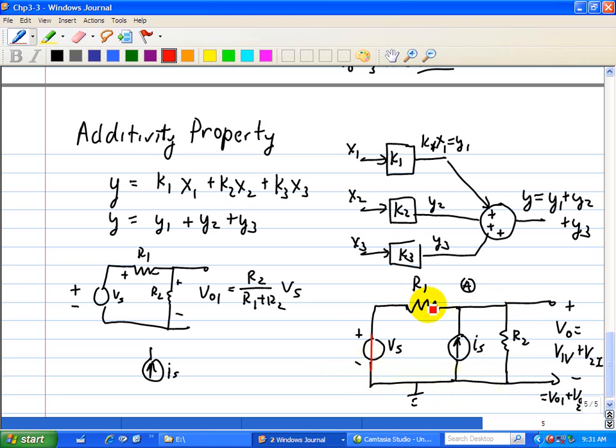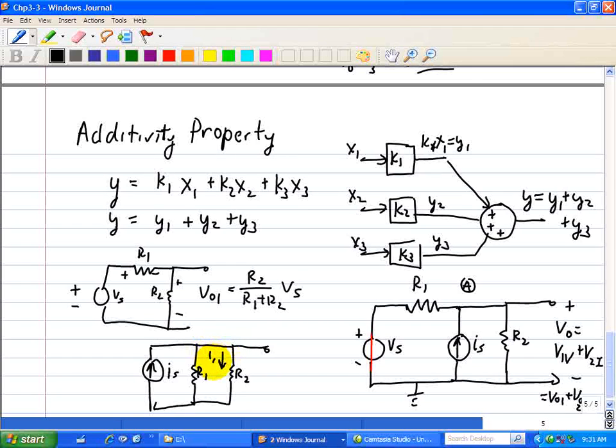So I'll just redraw that circuit. Here we have R1 and here we have R2 with VS removed. And so we have I2 there, and that's basically VO2.